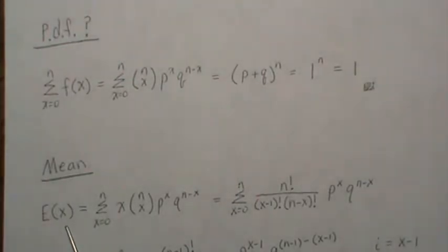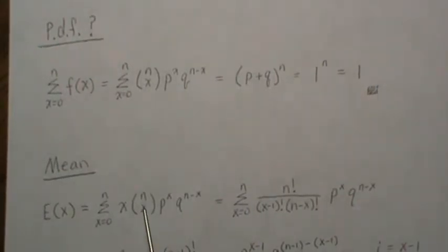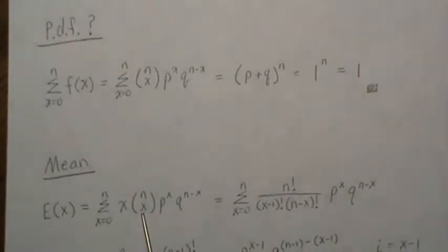That's the expected value of x. You sum over all values, you plug in that x times the probability mass function. Then this next step, I write this combinatorics, n factorial divided by x factorial times n minus x factorial.